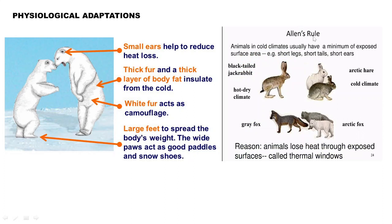This principle of small exposed surface reducing heat loss is explained by Allen's Rule. It states that organisms in cold climates have smaller surface areas to reduce heat loss. For example, the black-tailed jackrabbit in hot, dry climates has long ears, while those in cold climates have short ears. Similarly, the gray fox in hot climates has large ears while the arctic fox in cold climates has small ears.